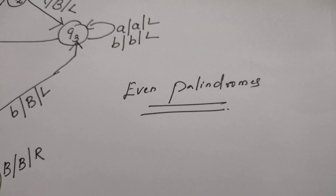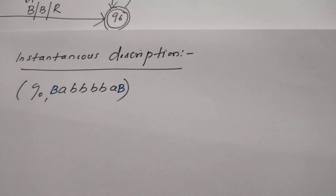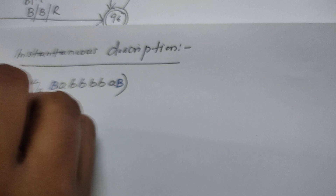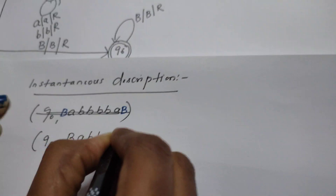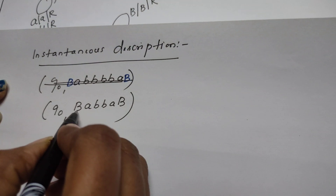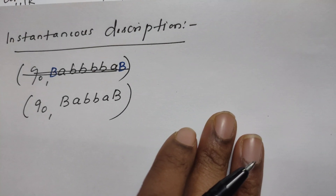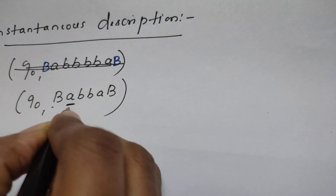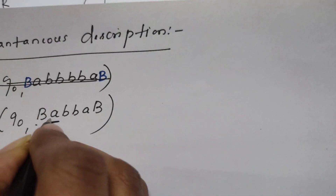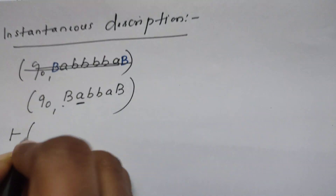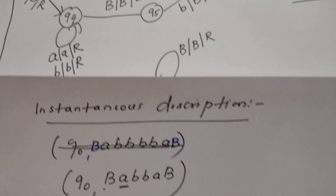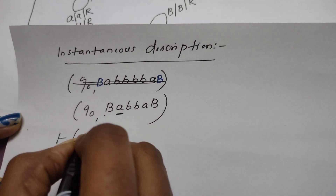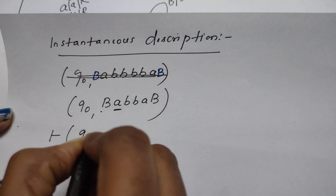Now let us trace the instantaneous description using the example string abba — a known even palindrome — surrounded by blank symbols. The Turing machine starts in state q0, with the read-write head pointing to the first character a. When it reads a, the state changes to q1, that a is replaced by blank, and the head moves right.